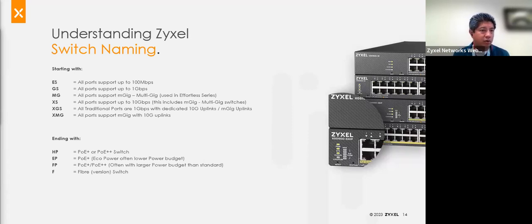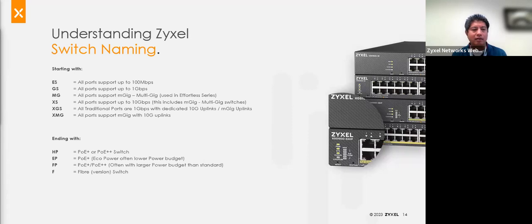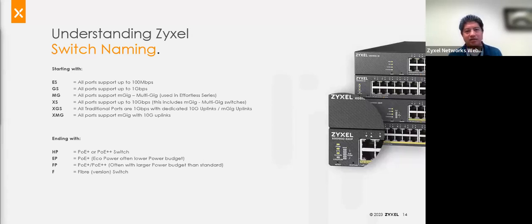Paul asks: have most multi-gig switches dropped support for 10BASE-T? I think a lot of the chipsets at the higher end — it's just such an old technology. Except maybe in some cases for printers or similar things. In general, it may be time to either switch out the interface or switch out the device to something newer that supports at least 100 megabits per second.